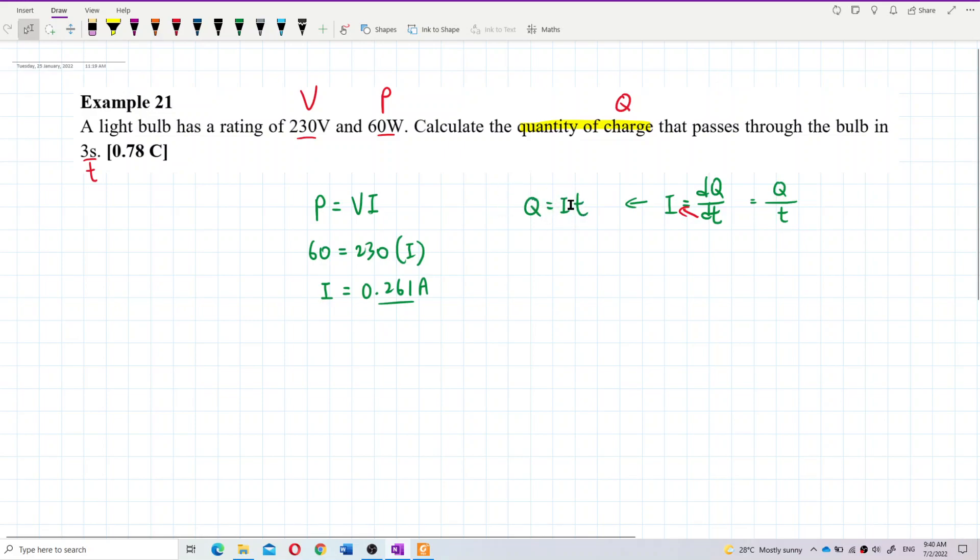We already got the current, so we just put it in here. So 0.261 ampere times three seconds, so the answer is 0.783 coulombs.